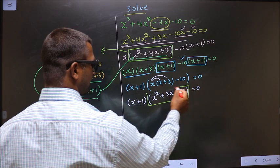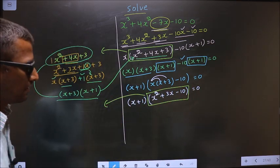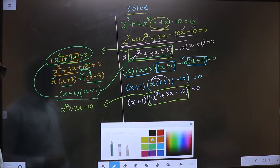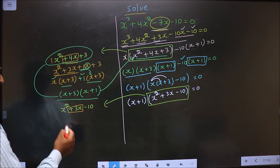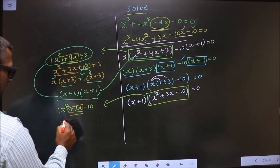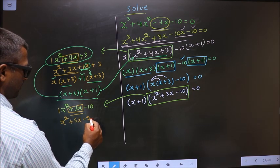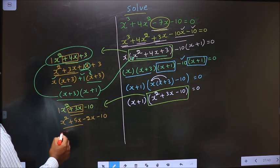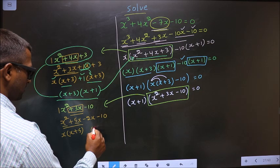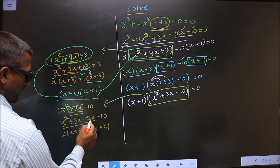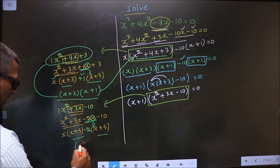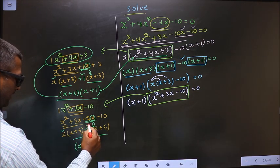Now we factorize x² + 3x - 10. To change the middle term +3x: 1 × 10 = 10, 5 × 2 = 10, and 5 - 2 = 3. So we write +5x - 2x - 10. Taking x common from the first two terms: x(x + 5), and from the last two terms: -2(x + 5). So the factored form is (x + 5)(x - 2).